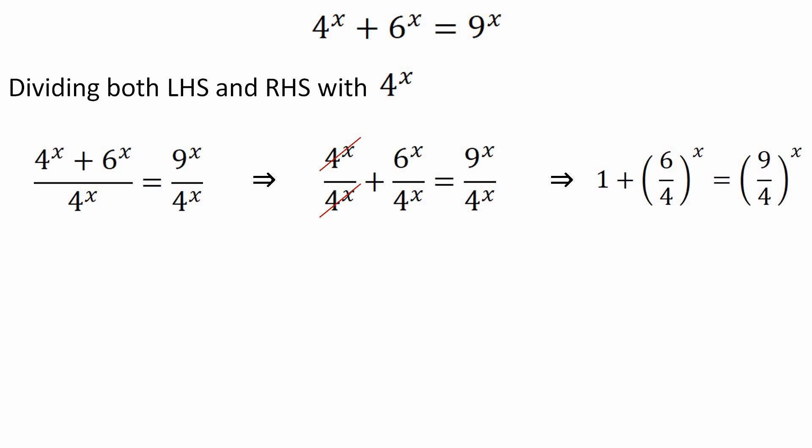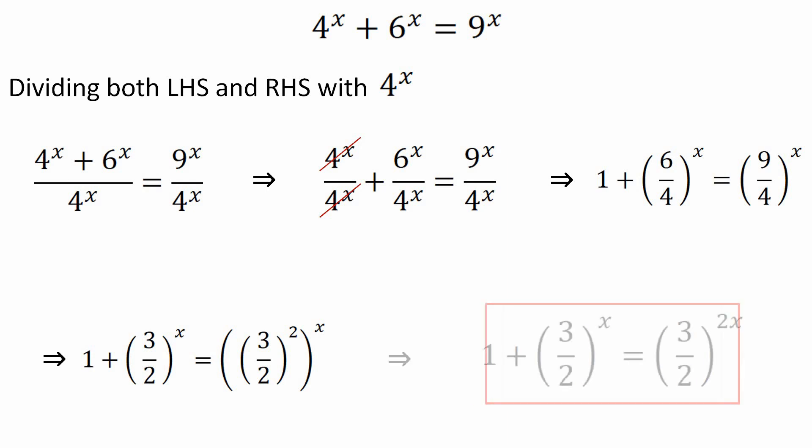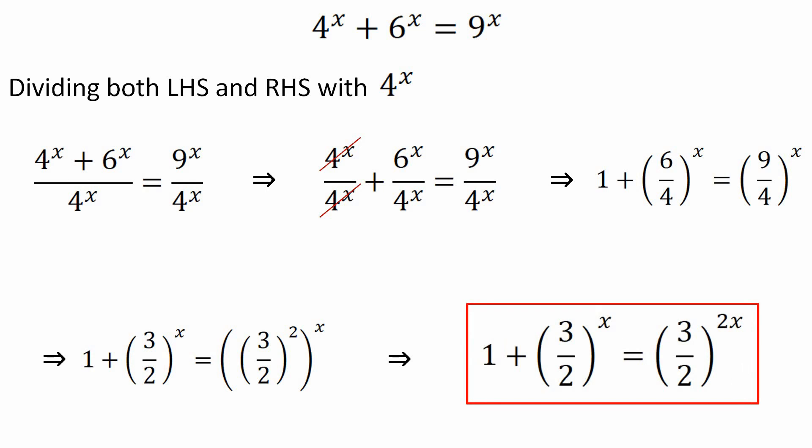On further simplification we get that 1 plus (3/2) to the power x is equal to (3/2) squared, whole to the power x. On the RHS, (3/2)² to the power x simply becomes (3/2) to the power 2x. So finally we get: 1 plus (3/2)^x is equal to (3/2)^2x.